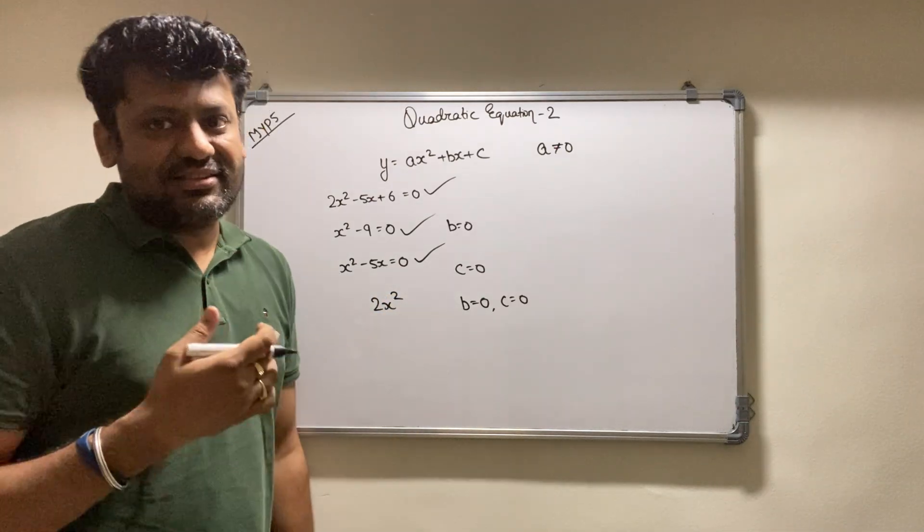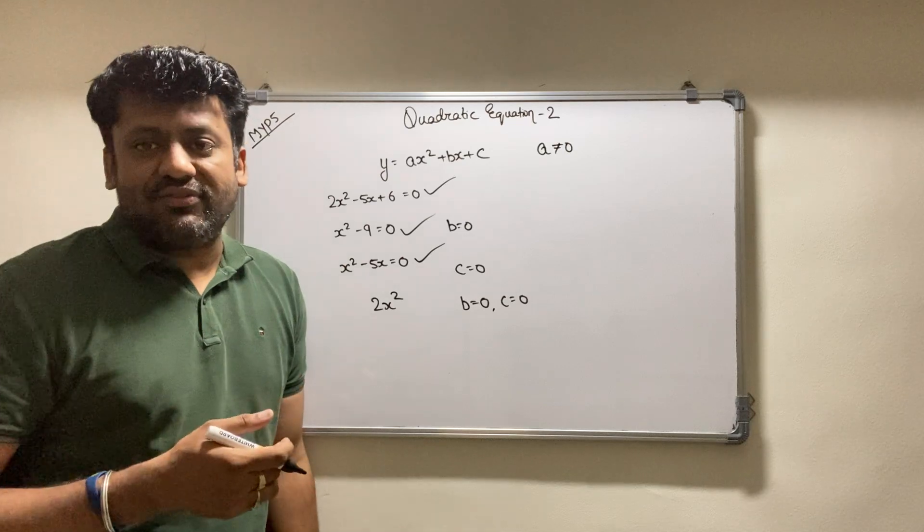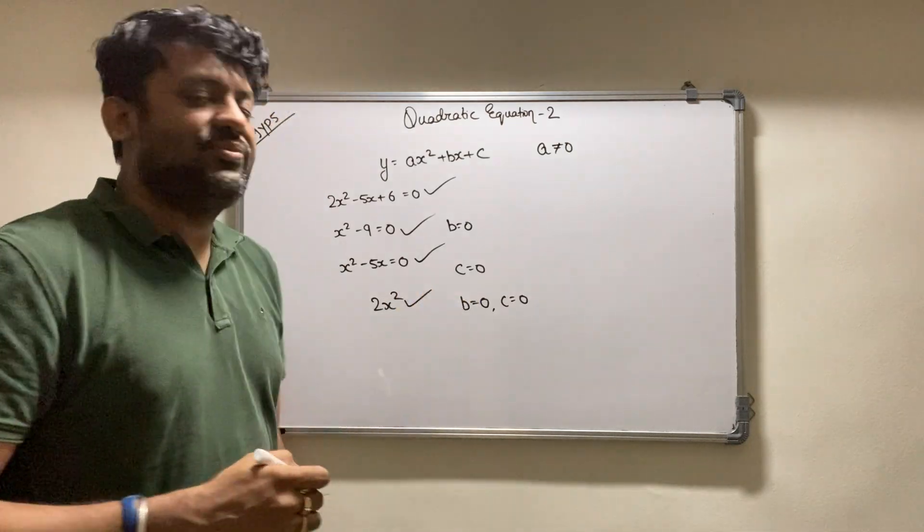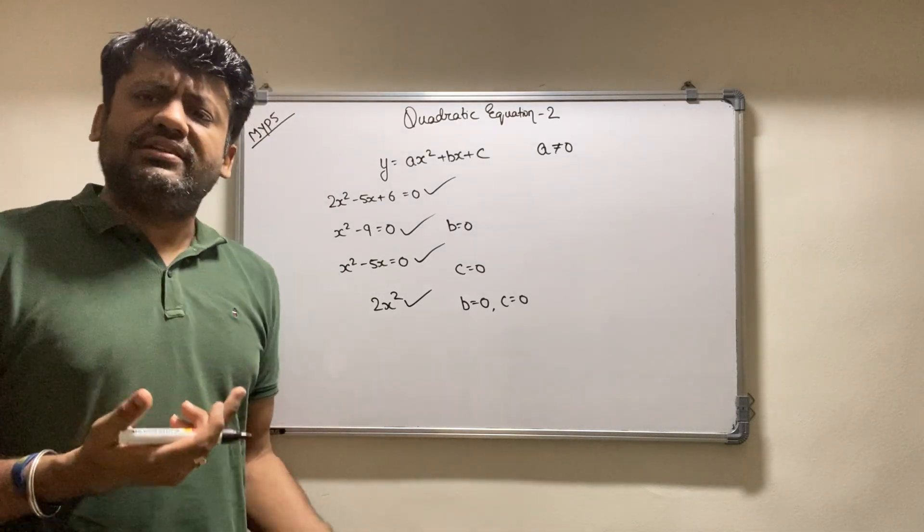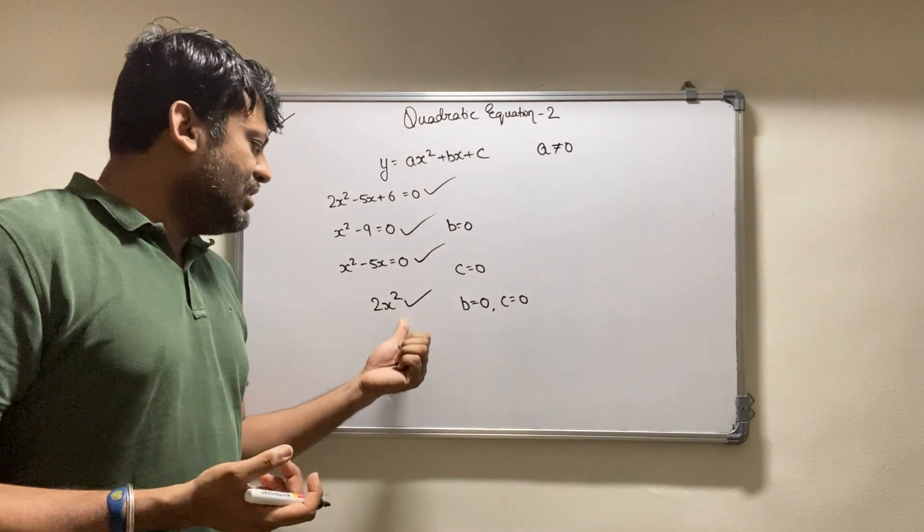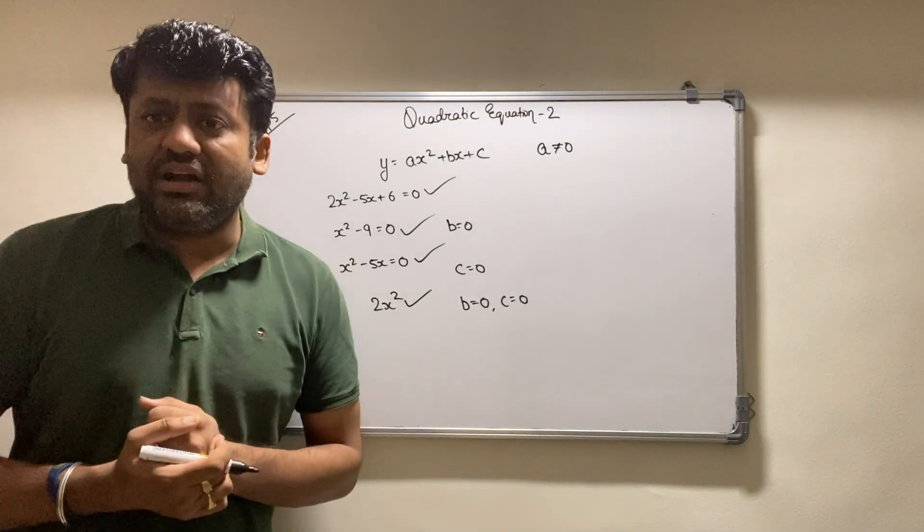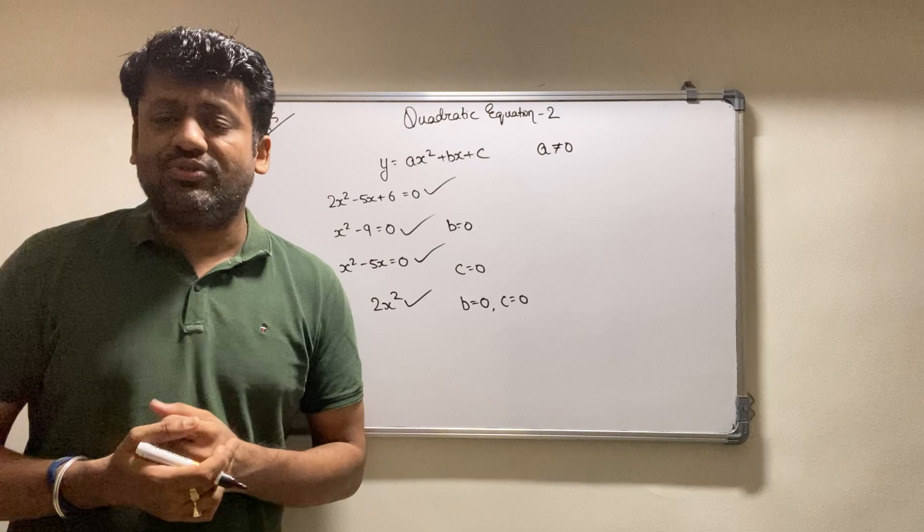So in most classes the kids say that this is not a quadratic equation, which is not right. Actually this is a quadratic equation. Why? Because it obeys all the laws of quadratic: the maximum power of x is 2 and you have a as non-zero, so it is a quadratic equation.